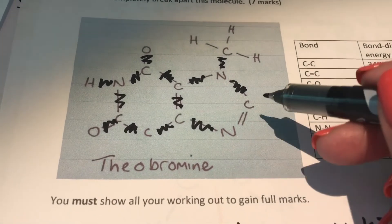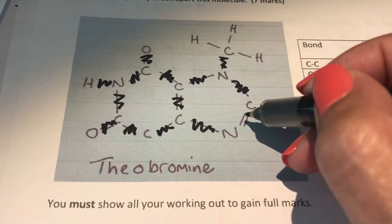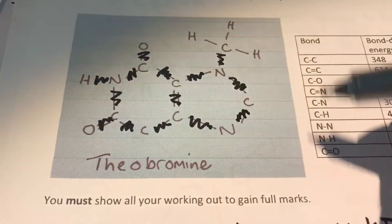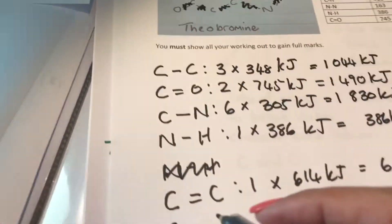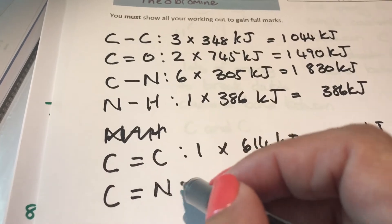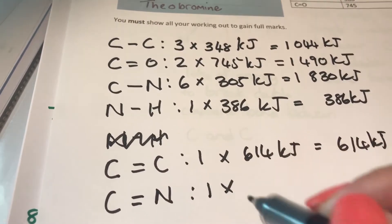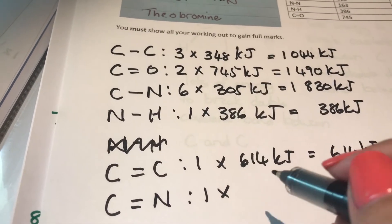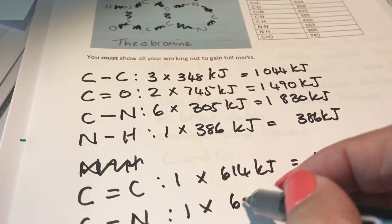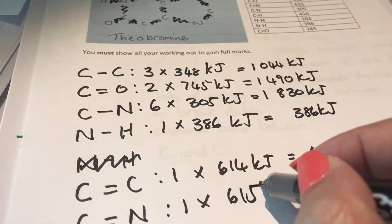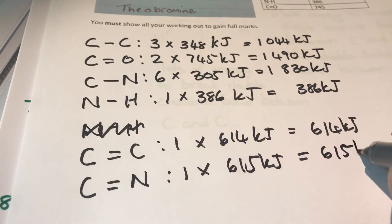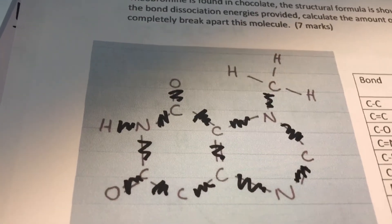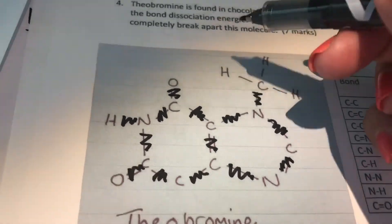When I look at my molecule I then see here is a carbon double bond nitrogen bond, and I only see one of them. So carbon double bond nitrogen — there's only one, and the bond energy is 615 kilojoules to break it. So there's only one, that's a total of 615 kilojoules.